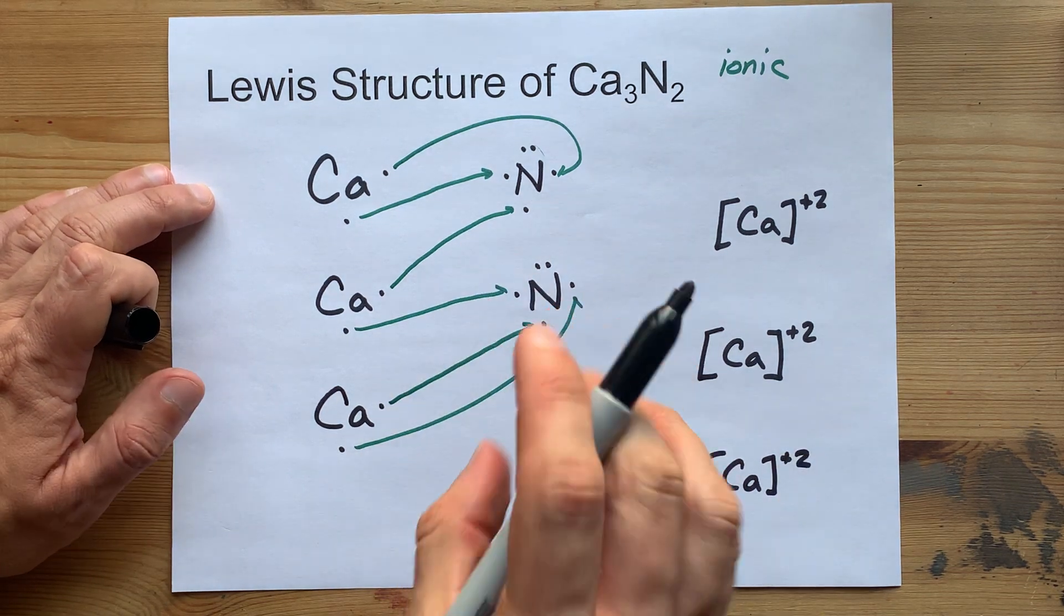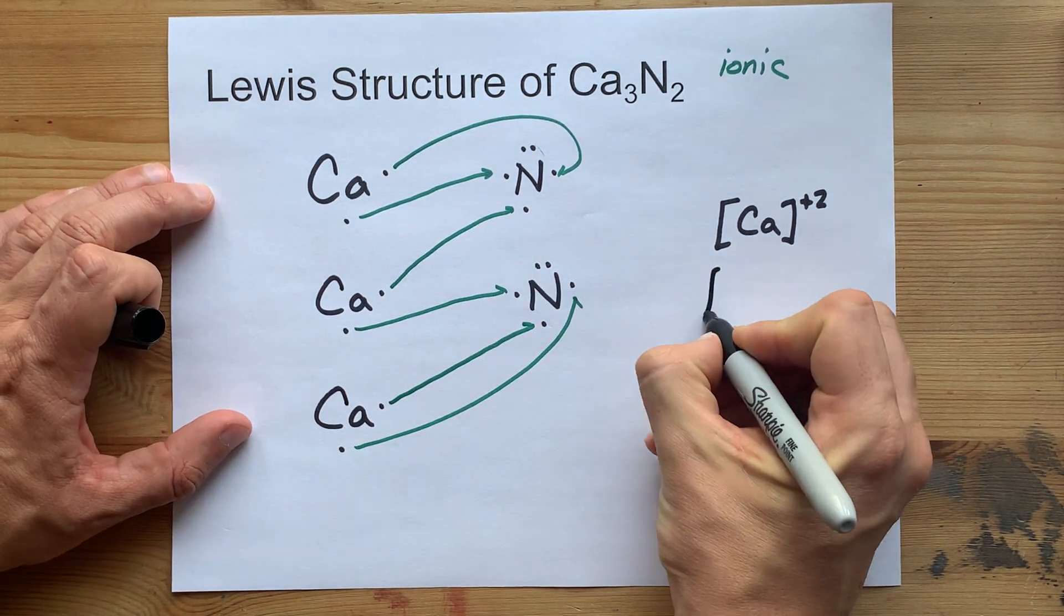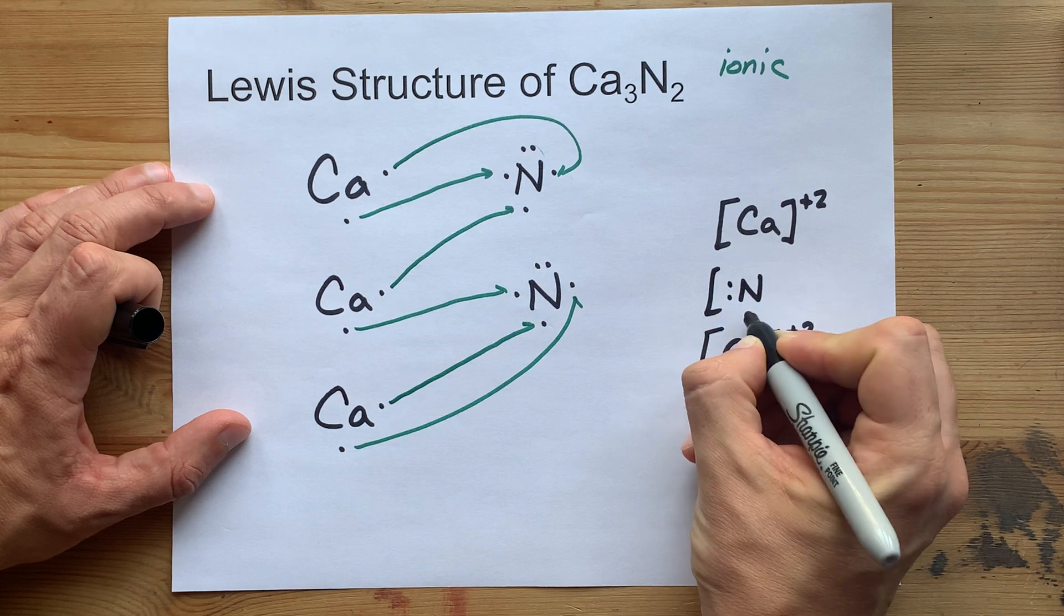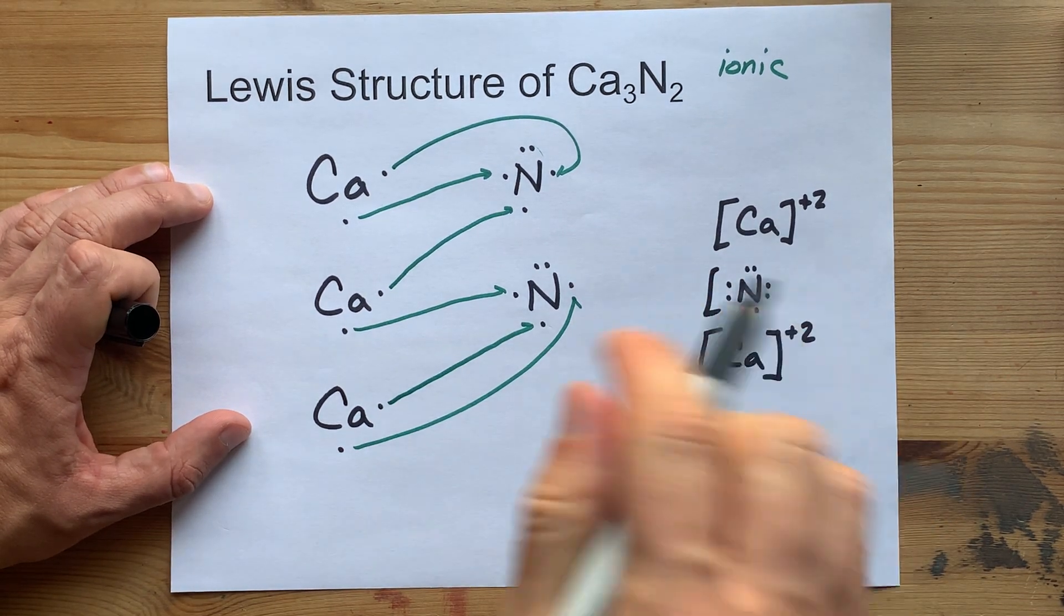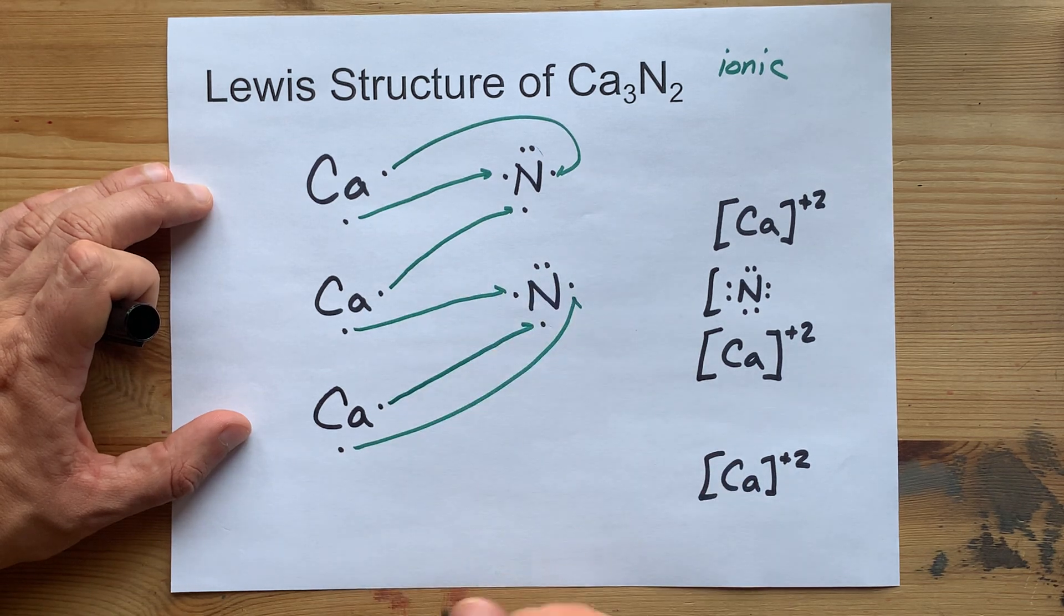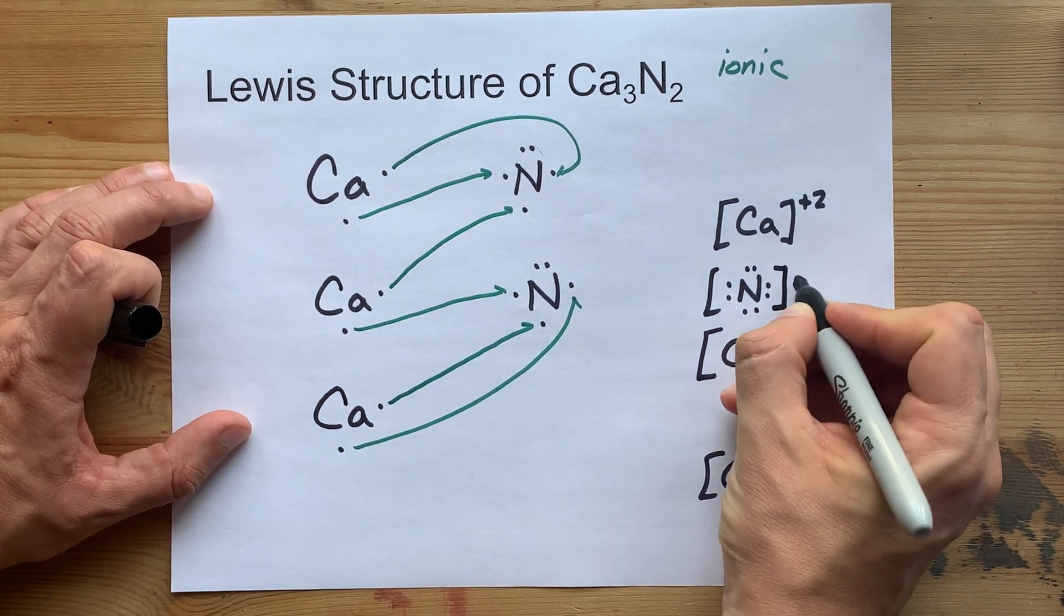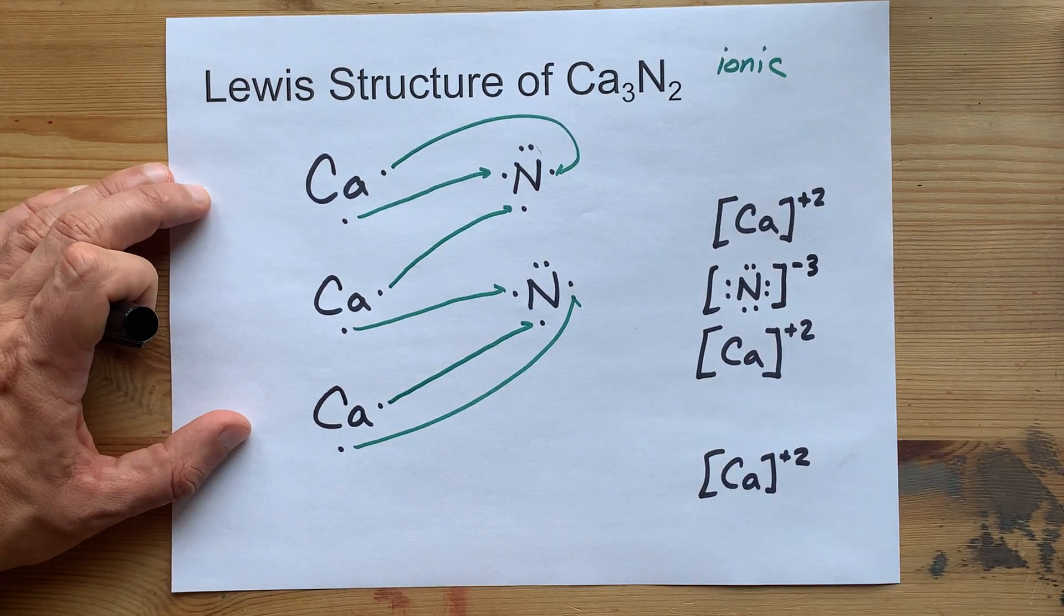The nitrogens, on the other hand, have those extra electrons. So, I'm going to draw the N with eight dots around it each. That was five plus three new ones on each diagram. The three new ones give it a minus three charge.